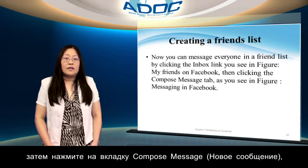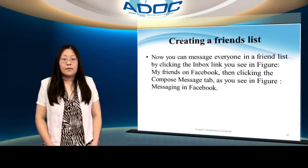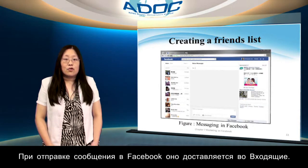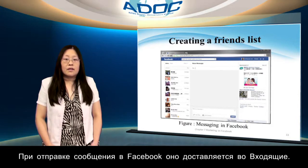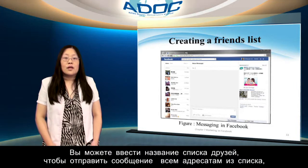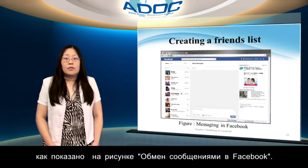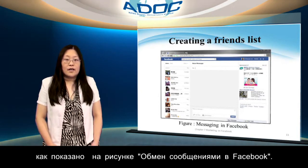Now you can message everyone in a friend list by clicking the Inbox link, then clicking the Compose Message tab. Messaging people on Facebook sends emails to their inbox. You can enter their name or a friend list to send your message to, as indicated by the fields on the Messaging in Facebook page.